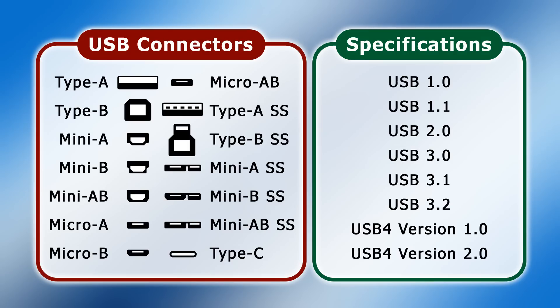Before we look at different USB connectors and specifications, it's important to note that the two are not directly related. To be clear, a particular connector does not indicate the USB specification used to communicate data. So for example, the popular belief that USB-C ports are always faster than Type A ports is not correct. So how can we make sense of USB standards?